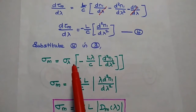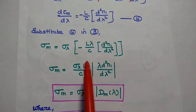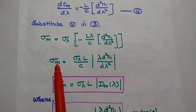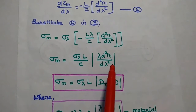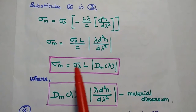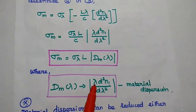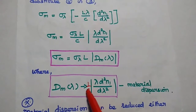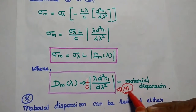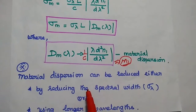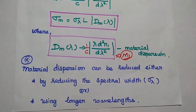Substituting the fourth equation into the third equation to get the RMS pulse spreading value: σm equals σλ times minus L times (λ/c) times d²n1/dλ². Taking the magnitude, σm equals σλ·(L/c)·λ·d²n1/dλ². This can also be written as σm equals σλ·L·Dm(λ), where the material dispersion factor Dm equals (1/c)·λ·d²n1/dλ², also denoted as capital M. From this equation, we see that material dispersion can be reduced either by reducing the spectral width or by increasing the wavelength.